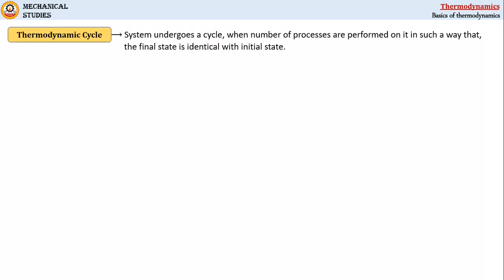Thus at the end of the cycle, the system is restored to its initial condition. For example, here the system undergoes a thermodynamic cycle with two processes with different paths—let us say path A and path B.